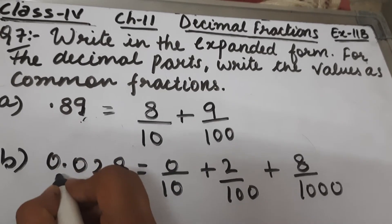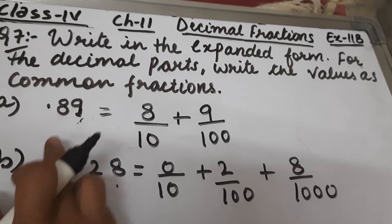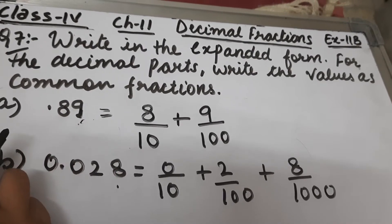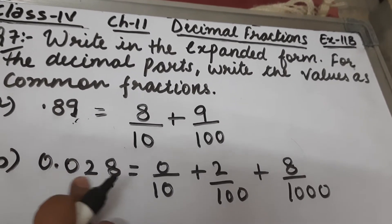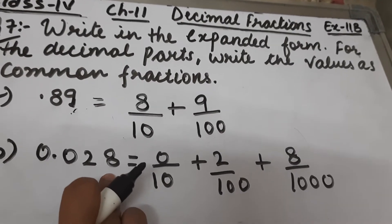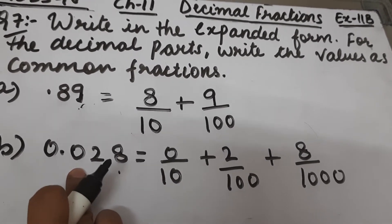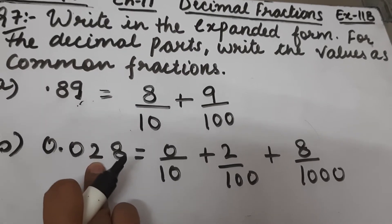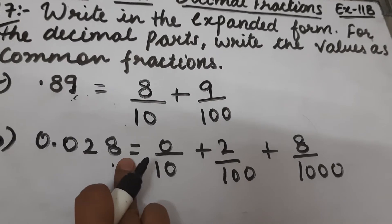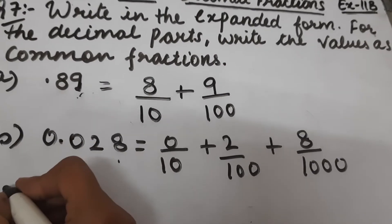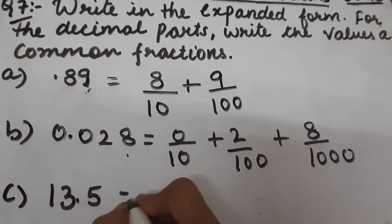The numbers just before the decimal are the ones place, tens place, and hundreds place. After the decimal is the tenths place, then hundredths place, then thousandths place. Tenths place means upon 10, hundredths place means upon 100, and thousandths place means upon 1000.